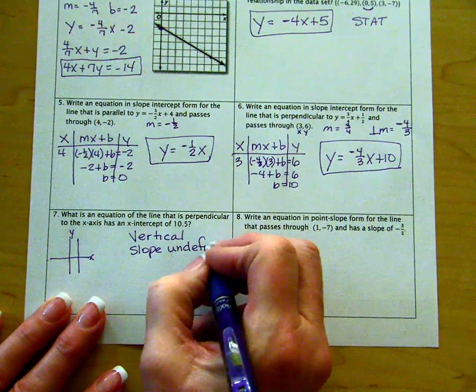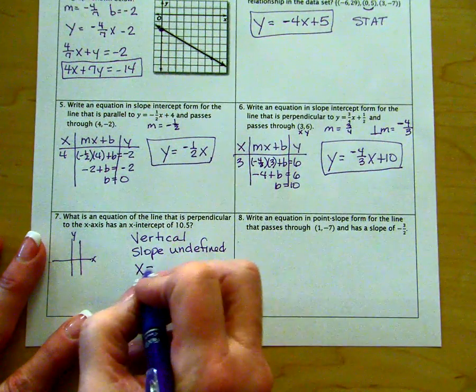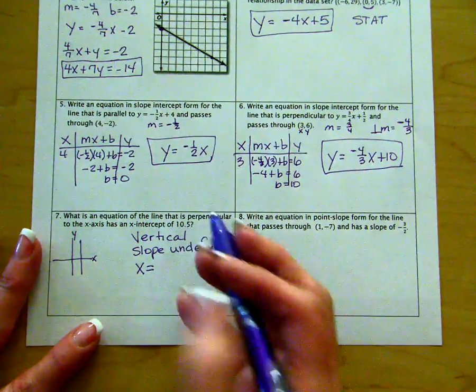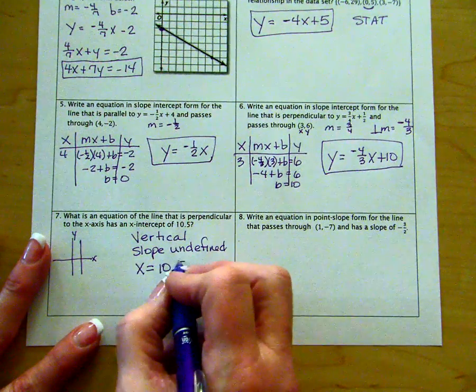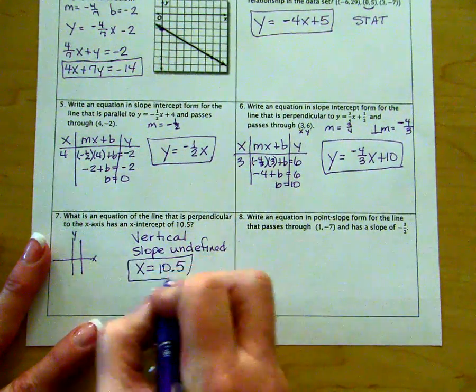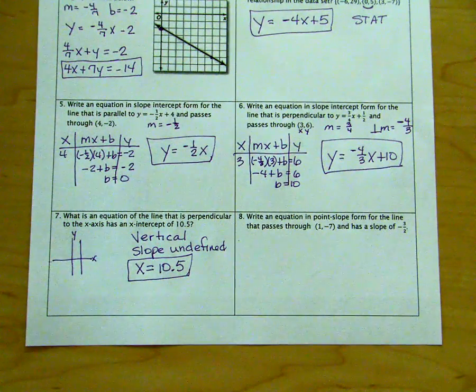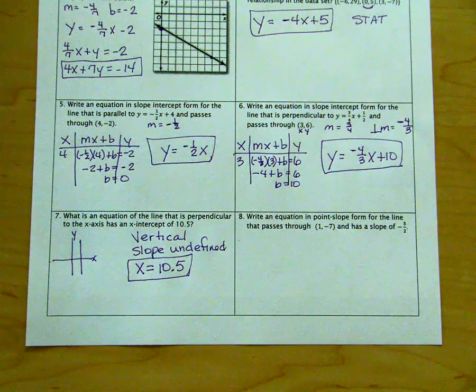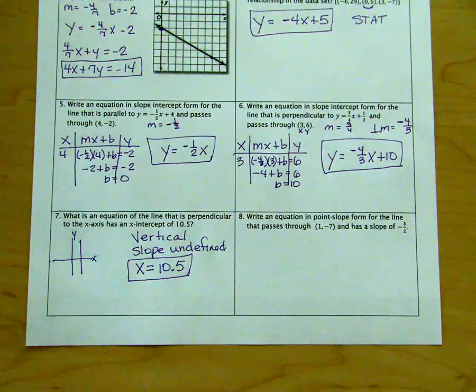And my equation is always of the form x equals. Well, they gave us an x value of 10.5. So the equation of a line that is perpendicular to the x-axis and has an x-intercept of 10.5 is x equals 10.5.